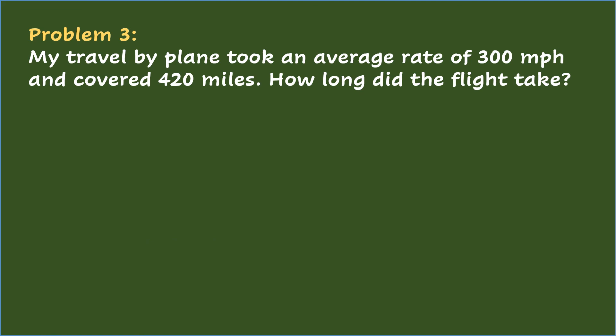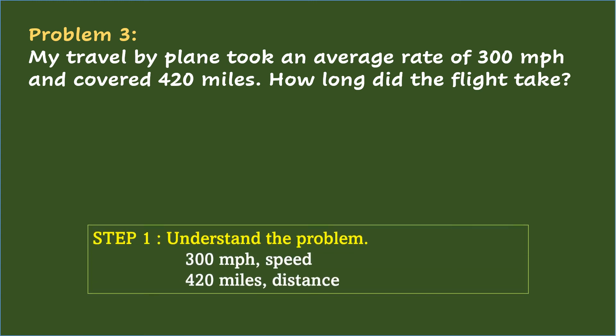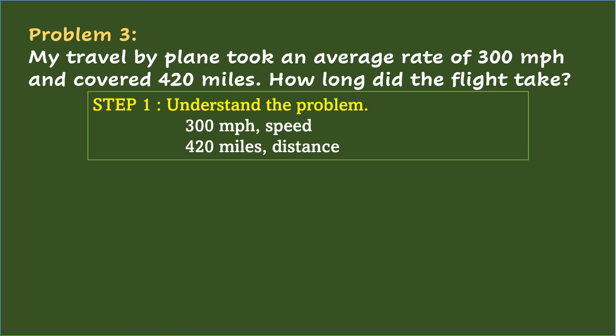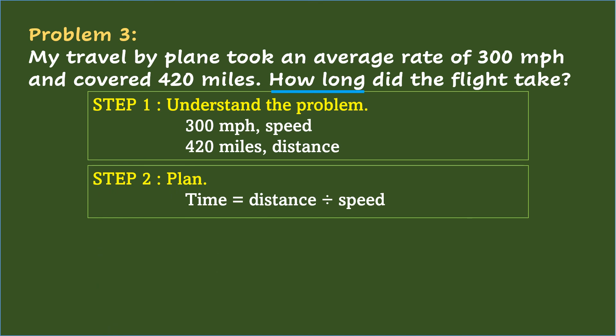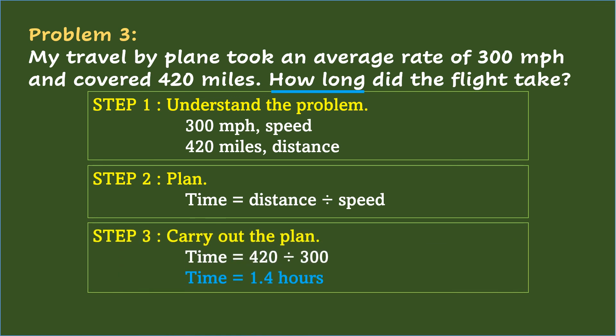Problem 3: A plane trip took an average rate of 300 miles per hour and covered 420 miles. How long did the flight take? Step 1 — Understand the problem: the missing value is the time; the speed is 300 miles per hour and the distance is 420 miles. Step 2 — Plan: since time is missing, use time equals distance divided by speed. Step 3 — Carry out the plan: time equals 420 divided by 300, which equals 1.4 hours.